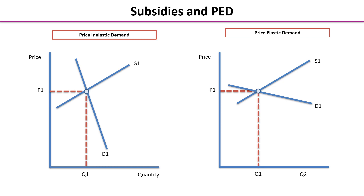Here we have a demand and supply diagram on the left showing a price inelastic demand, and a demand and supply diagram on the right showing a price elastic demand, and that can be seen from the gradient of the demand curve. Please note that in both diagrams, roughly P1 is at the same level, so they are roughly on the same scale.